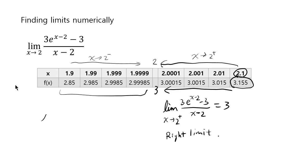And this side of the table can be written as x goes to 2 minus of this function 3 times e to the x minus 2 minus 3 over x minus 2 is equal to 3. And this is called the left limit.